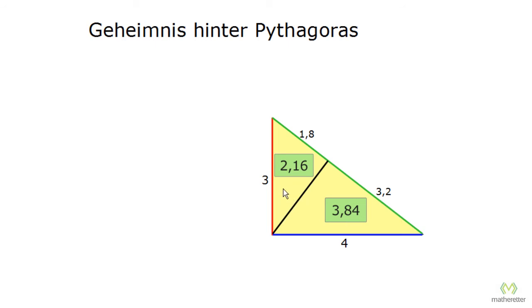As you can see, 3.84 plus 2.16 gives 6 square centimeters, the area of our entire triangle. We can calculate that here as well: 3 times 4 is 12, half of which is 6. So our entire triangle is 6 square centimeters, the small one up here is 2.16, and the one right here is 3.84.